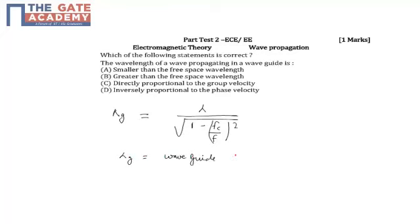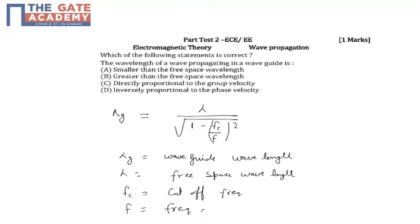Where lambda_g is waveguide wavelength, lambda is free space wavelength, Fc is cutoff frequency, and F is frequency of given wave.